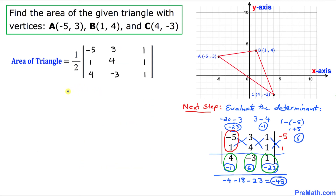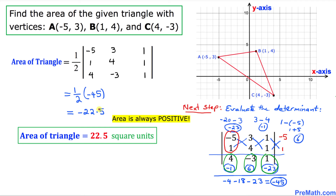So that's our final step. Our area of the triangle is going to be 1 over 2 times the value of this determinant, which turns out to be negative 45. That's going to be negative 22.5. And now we know that the area must always be positive, so this negative number must be positive. Thus the area of this given triangle turns out to be positive 22.5 square units. And that is our answer.